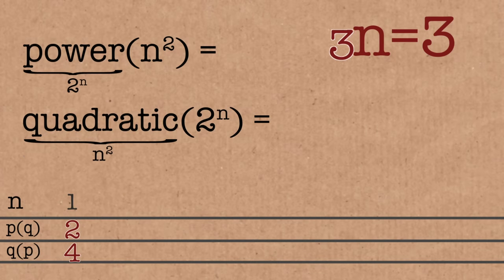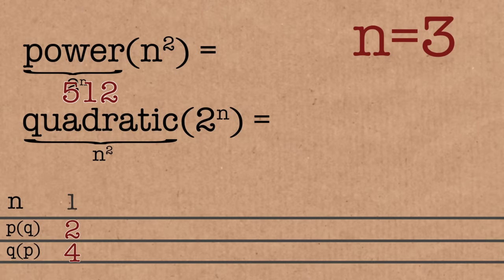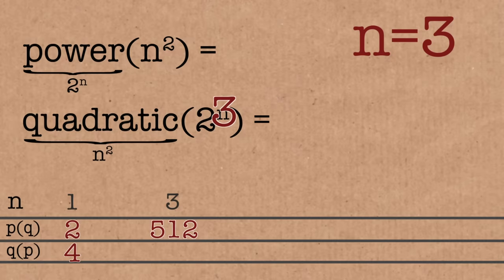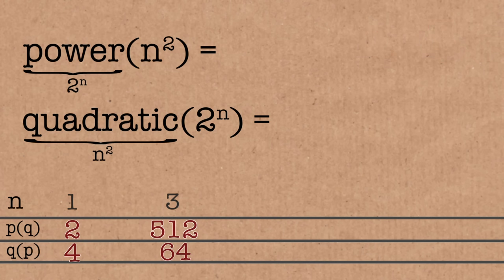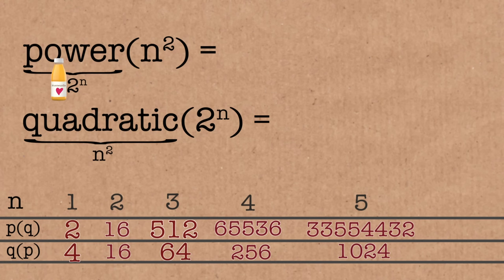Let's try n=3. Quadratic first: q(3)=9, then p(9)=2^9=512. The other way: p(3)=2^3=8, then q(8)=64. So 512 beats 64 — the minute we go to a slightly bigger number, it's advantageous to do the big function last. As long as you take n bigger than 2, it's always going to be better to do the most powerful function last if you want to get to really, really big numbers.